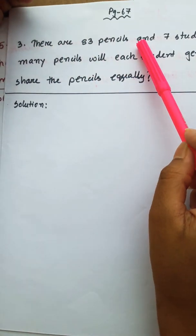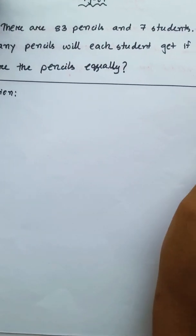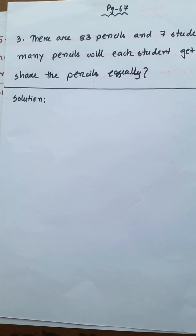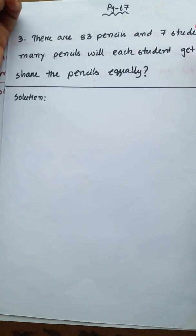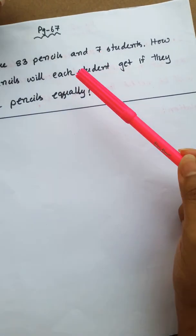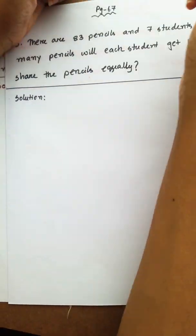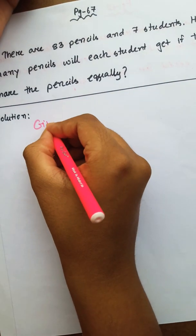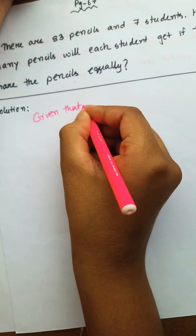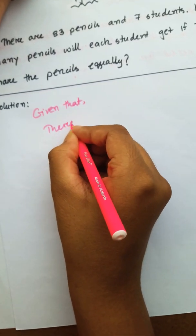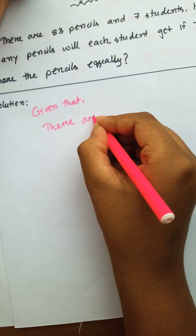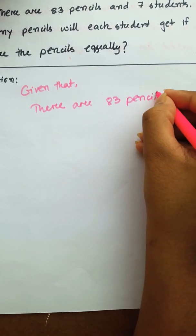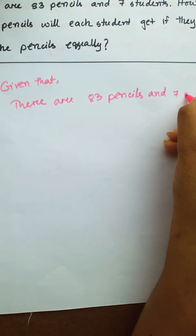There are 83 pencils and 7 students. How many pencils will each student get if they share the pencils equally? Let's go to page number 67. Given that there are 83 pencils and 7 students.